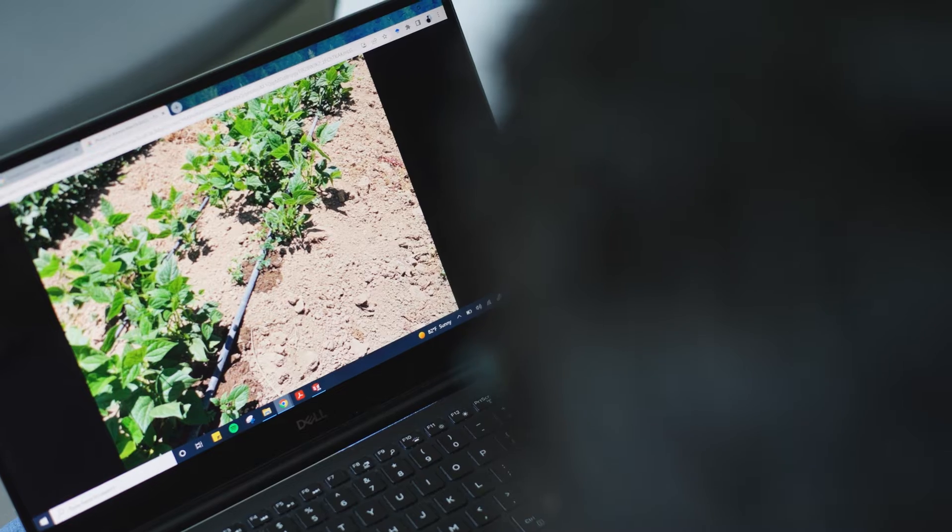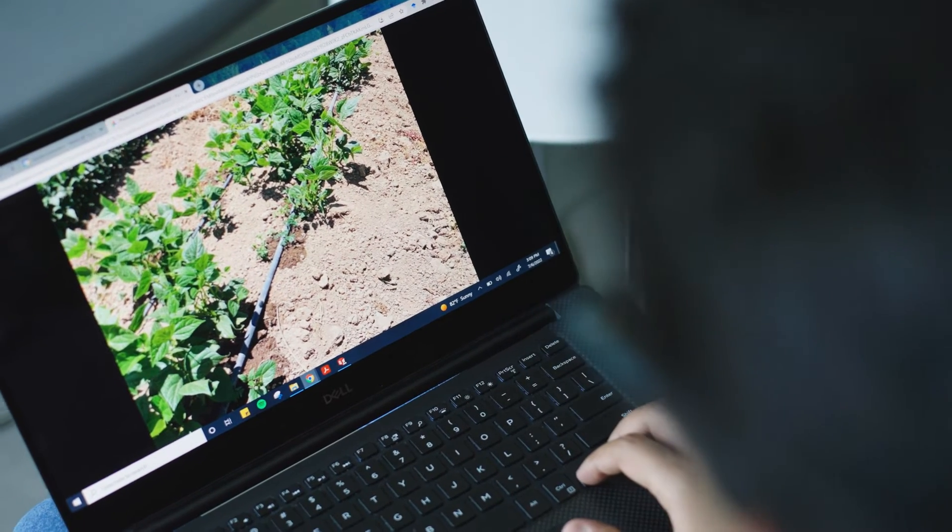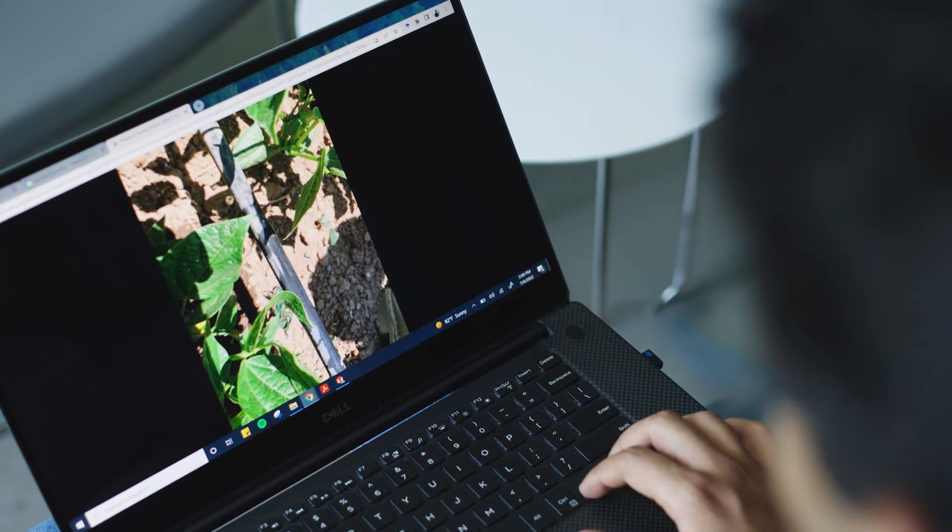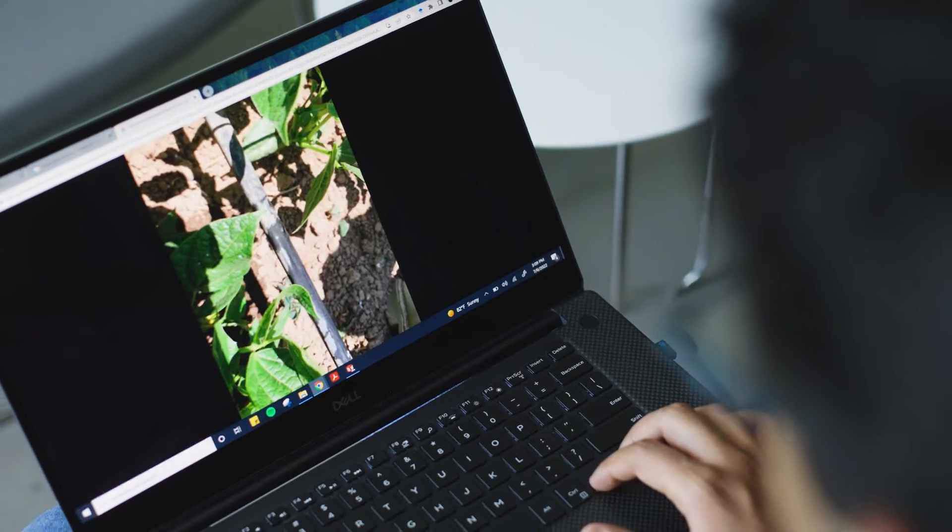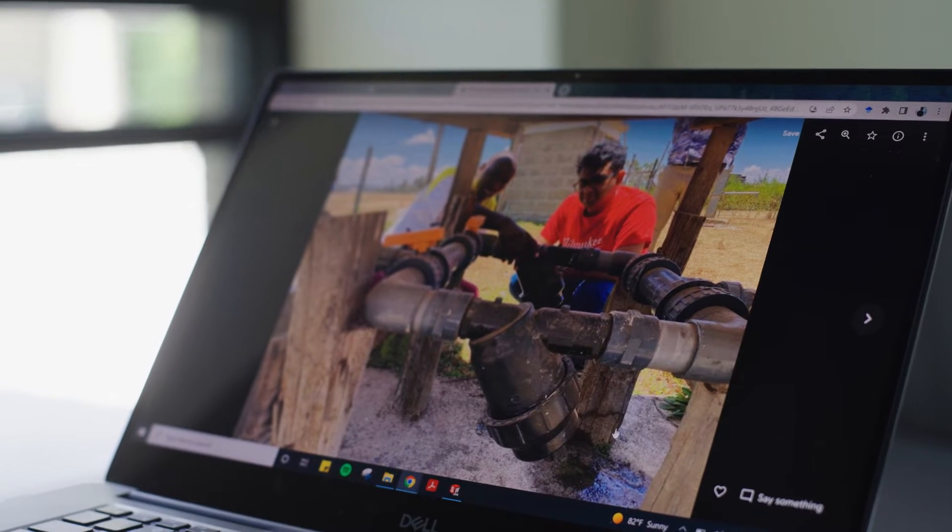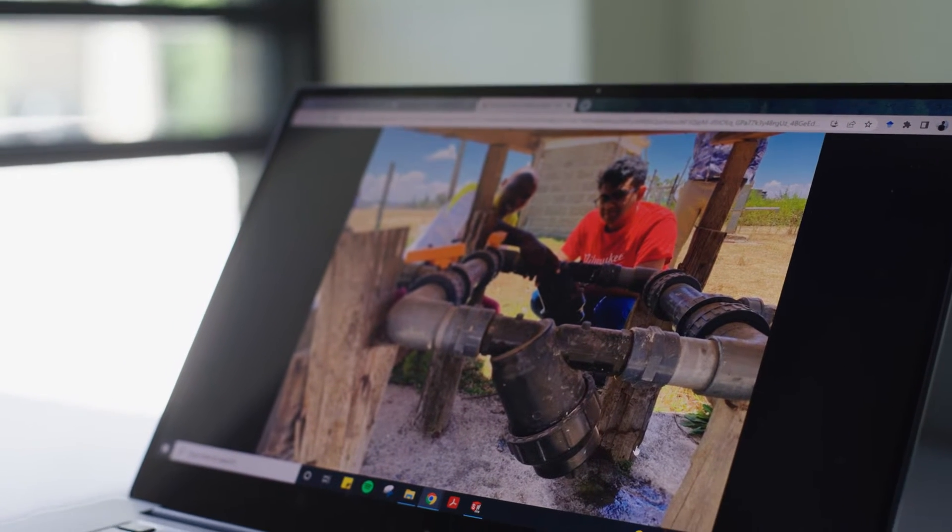These farmers will install the right filter that the distributor tells them to use. They will clean it at regular times, but over the period of a year to a year and a half, particles that are smaller than the filter gap are going to start building up. Beyond a certain point, if an emitter clogs, say one in a hundred-foot length of tubing, you can't just discard the entire tubing.